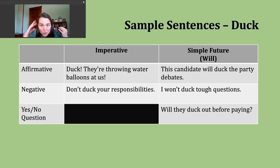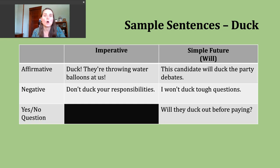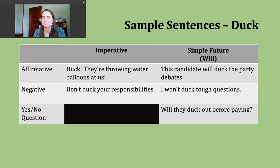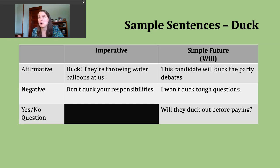You might hear someone shout that, wanting you to lower yourself down — perhaps they're throwing water balloons and you want to avoid being hit. If I want to make a negative imperative sentence, I begin with do not and then the base verb — or you might hear the contraction don't, as in: don't duck your responsibilities. That goes back to the meaning of avoid. You can soften an imperative or make it more polite by using the word please, either at the beginning or the end of the sentence — just one please is fine.